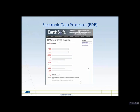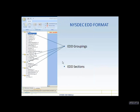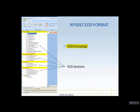When you download the format files, you'll need to open EDP and register, putting your information into the screen, which will then send you a registration string to work with EDP. The format has multiple groupings: field, vapor intrusion, laboratory, and basic chemistry, which is essentially the historical data you can submit to EDP. It also has EDD sections.